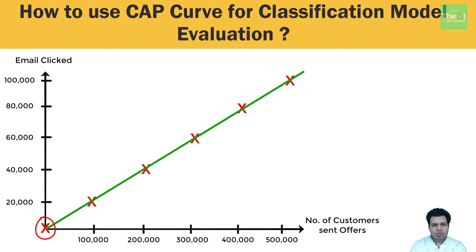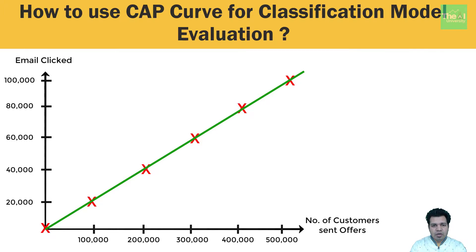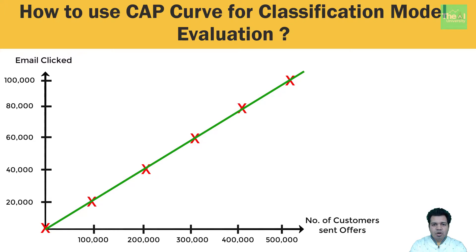If your company chooses to send the email offer to 100,000 customers, then 20,000 of them are going to click on those offers. If they send to 200,000 customers, then 40,000 will click. If they send to 300,000 customers, 60,000 will click. If they send to 400,000 customers, 80,000 will click. And finally, if they send to all 500,000 customers, then 100,000 of them are going to click. This scenario is called a random scenario because the company is sending offers randomly based on past experience, and this line can be treated as a random model.